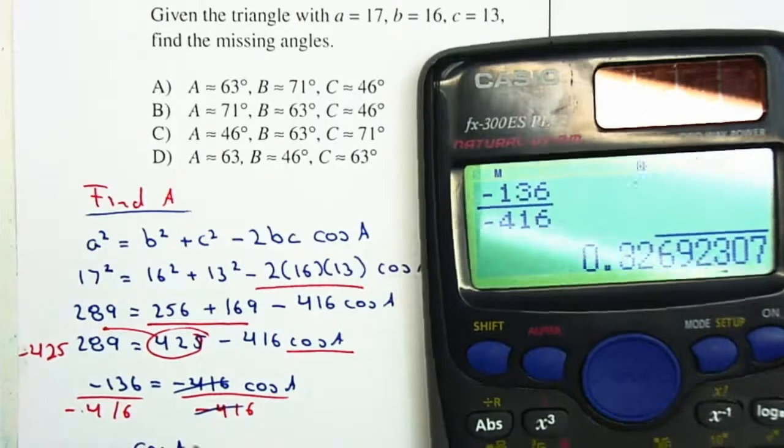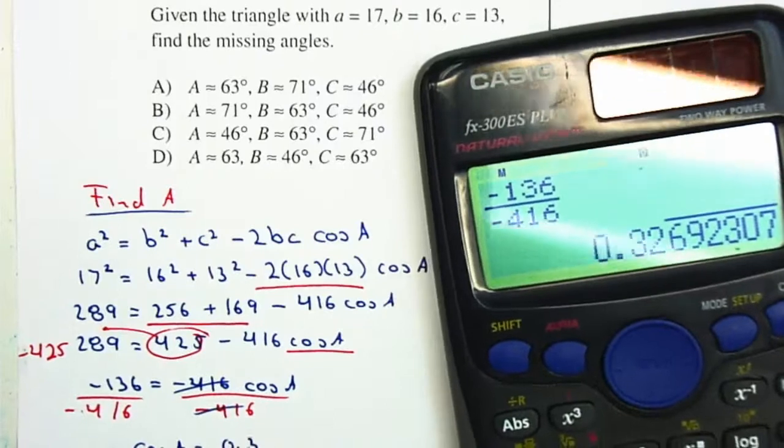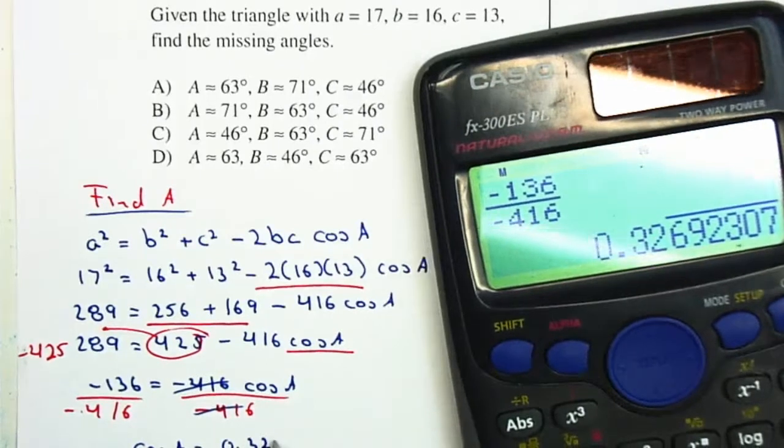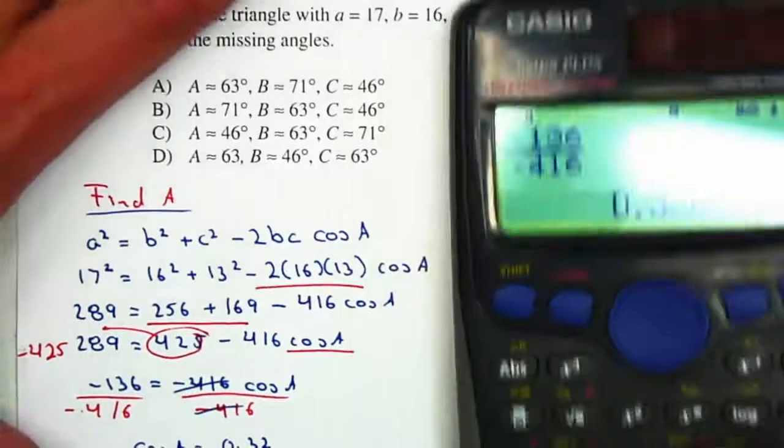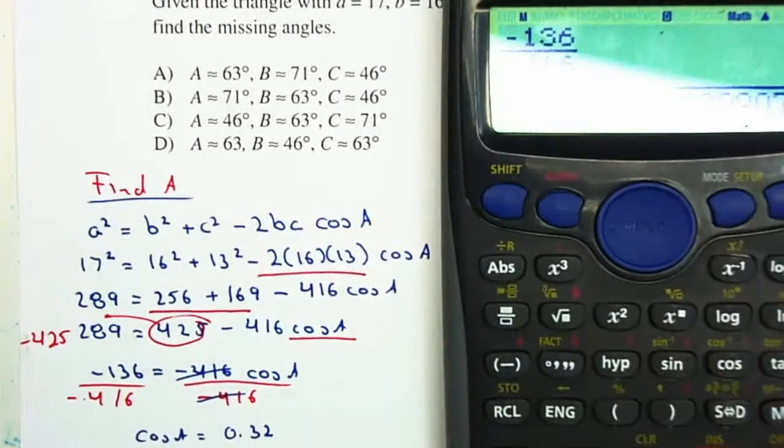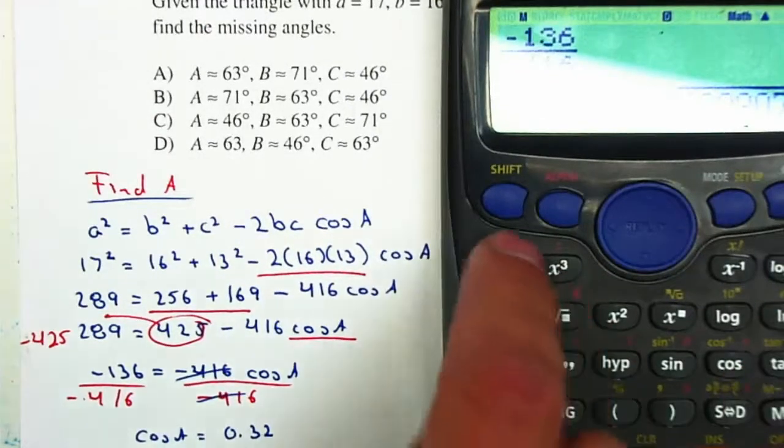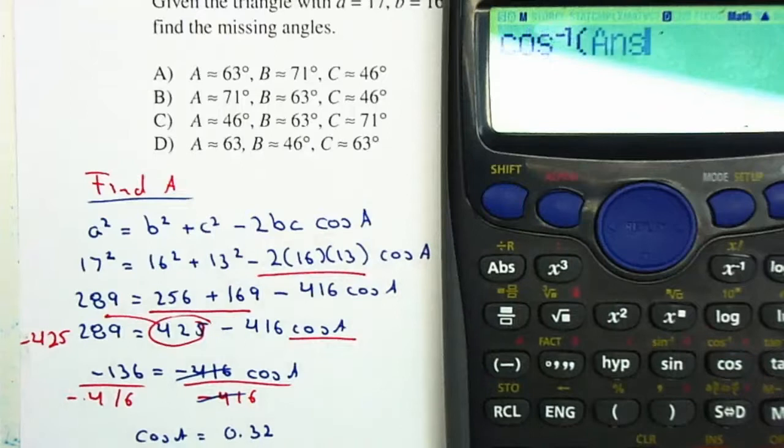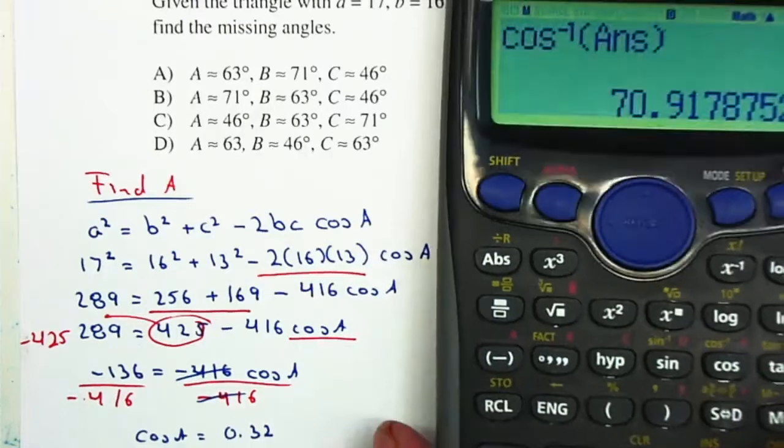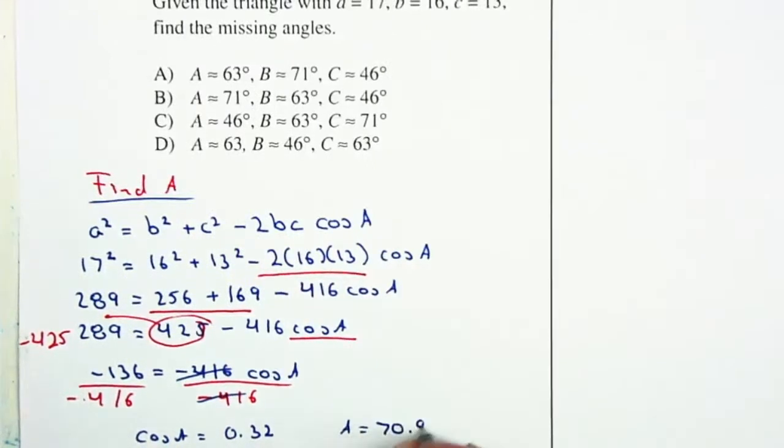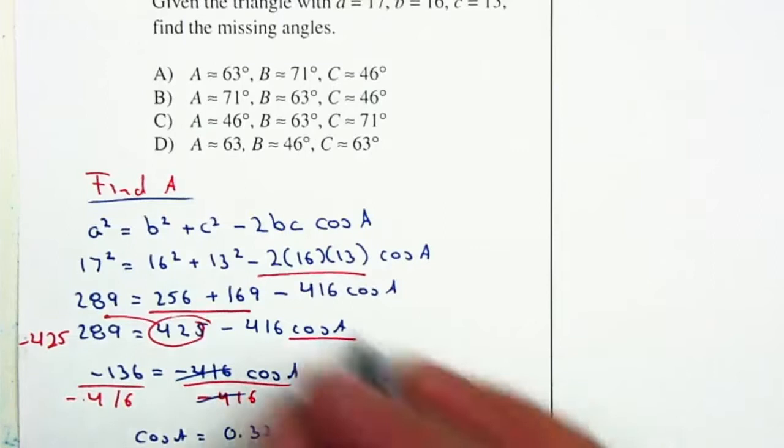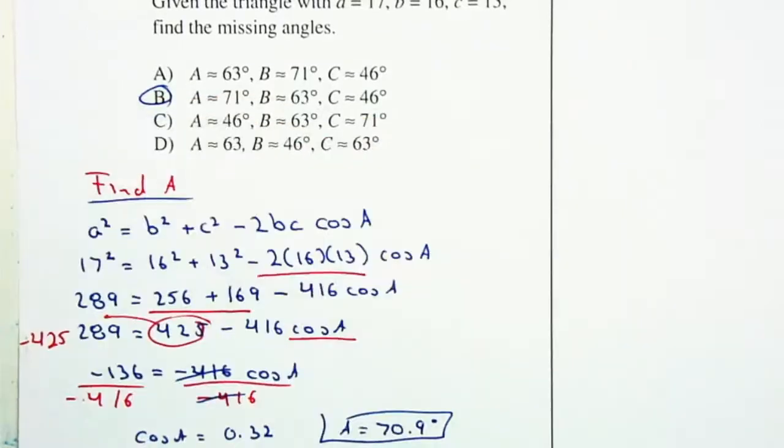So cosine of A equals 0.326. Since I have this, I'm going to take the inverse cosine to find my angle. Inverse cosine of my answer gives 70.9°, therefore A = 70.9°, or in this case it will be letter B, 71°.